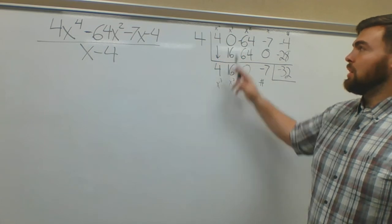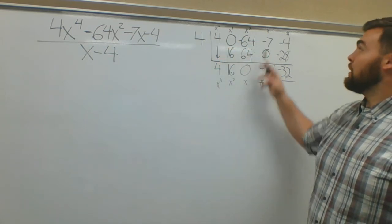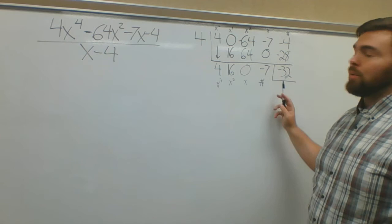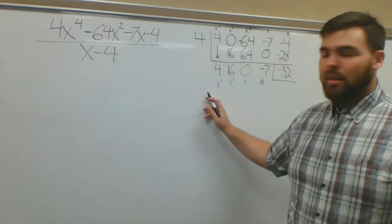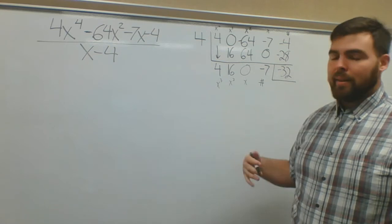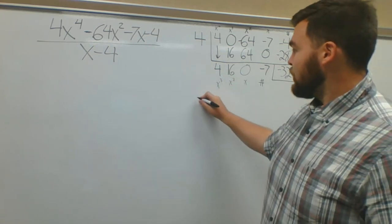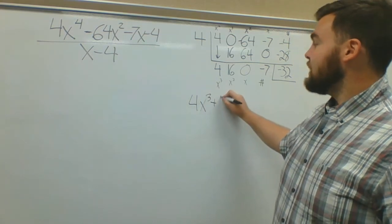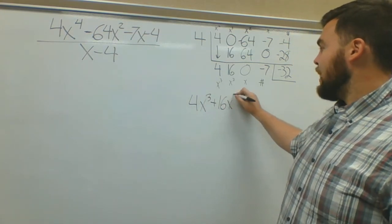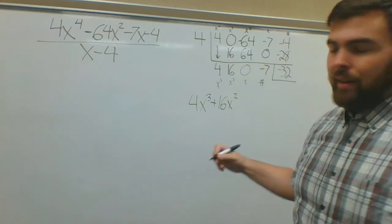This number here is always one less of a degree than the original first term in the polynomial. Starts x to the fourth, now it's third. Third to second, second to first, x to constant, constant to remainder. If you want to think about it like that, that's fine. I like writing those out sometimes because I always get it right there, and you will too. So these are coefficients: 4x to the third plus 16x squared plus 0x. I'm not going to write that.